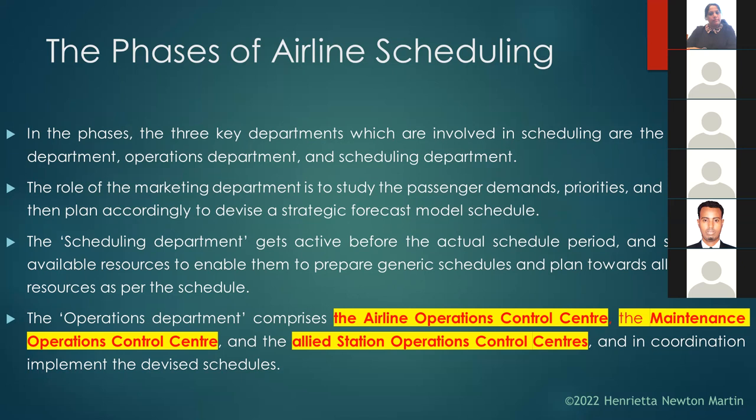The role of the marketing department is to study passenger demands, priorities, and needs, and then plan accordingly to devise a strategic forecast schedule. The scheduling department gets active before the actual schedule period and studies available resources to prepare generic schedules and plan towards allocation of resources.